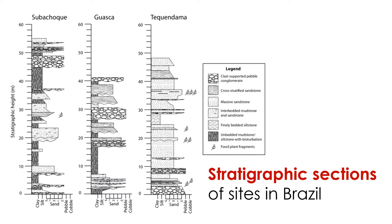Stratigraphy often involves the use of a special type of geologic cross-section called a stratigraphic column, or strat column. These sections are specially prepared for visualizing vertical variation and relative positions of strata at a specific site. As in other geologic sections, the y-axis is a vertical position, and pattern fill illustrates lithology. Importantly, the x-axis illustrates grain size, indicating whether the grains are clay, silt, sand, pebble, or cobble-sized.